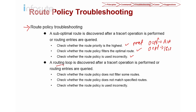The second condition is a routing loop discovered after traceroute. Check whether the route policy does not match a specific route. Check your ACL and your IP prefix. Check whether the route policy is used incorrectly. Double-check inbound and outbound directions, and check the permit and deny actions on your ACL. All of this is important when troubleshooting your route policy.